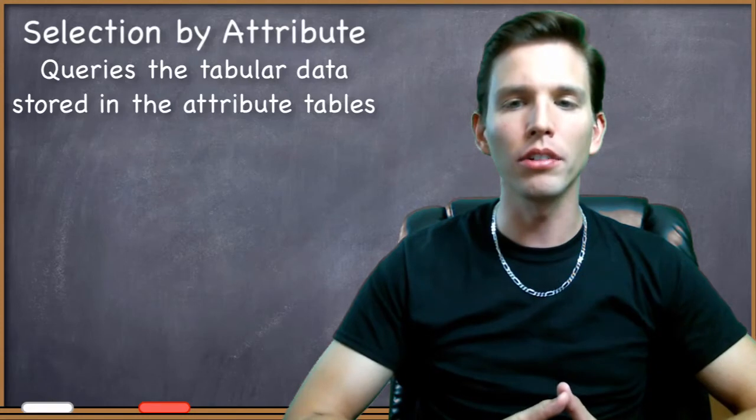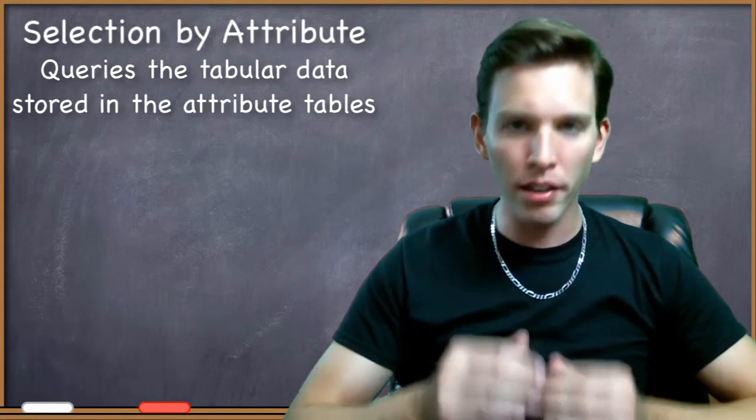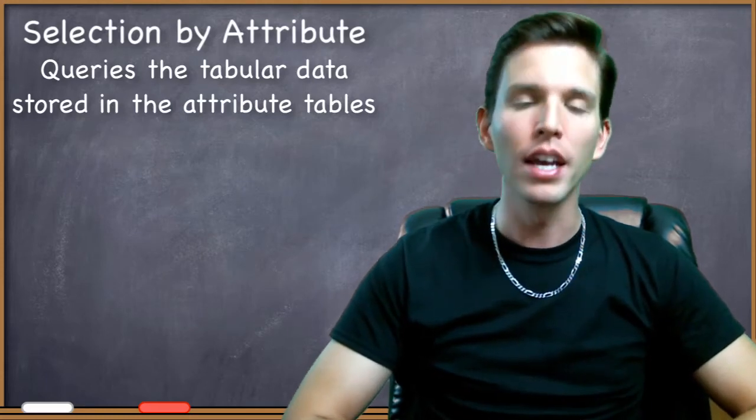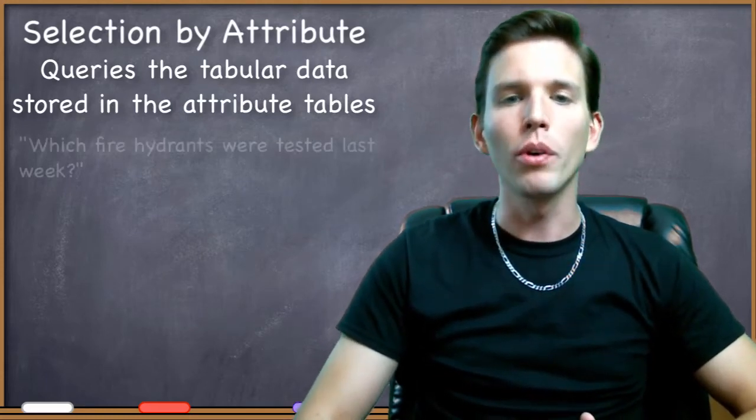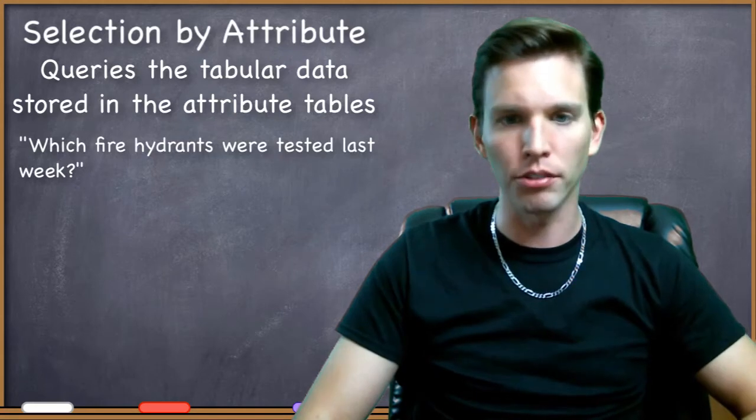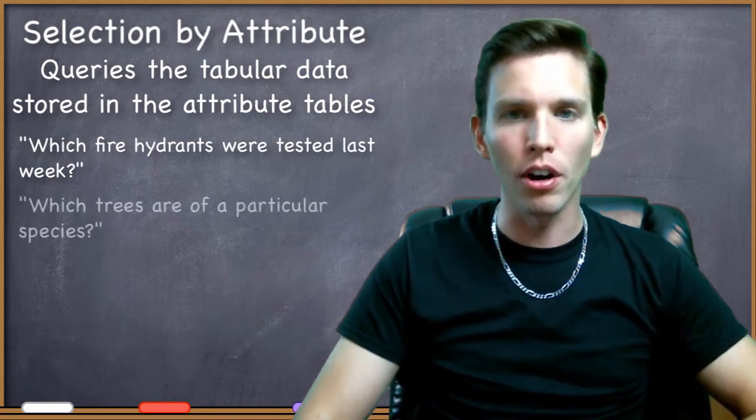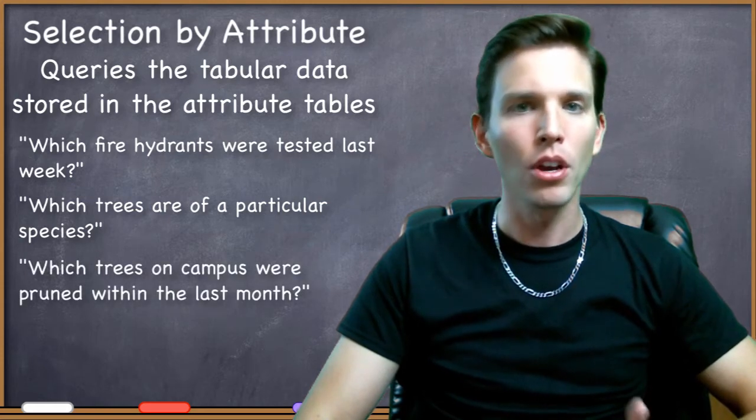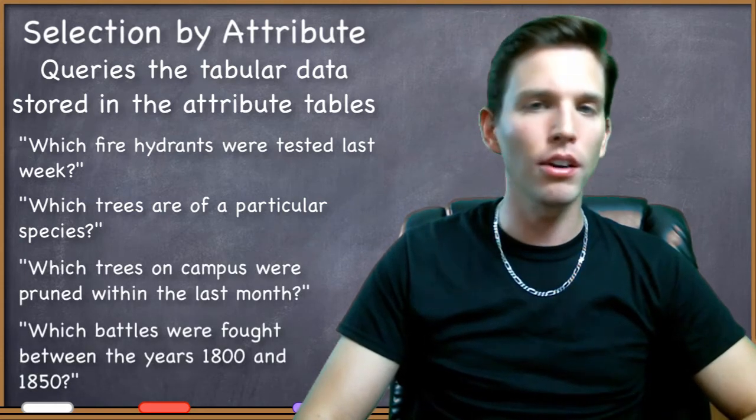Selection by attribute is your method for conducting queries based on the tabular attribute tables of the vector data. If you need to query information that's held in the attribute table of some vector dataset, your method for getting at the information held in those data tables is selection by attribute.